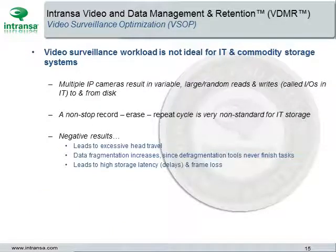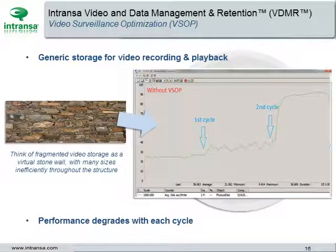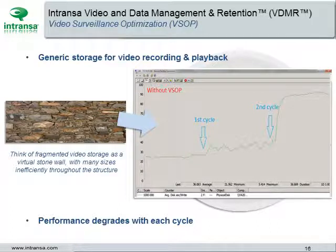Video surveillance workloads are also not ideal for IT and commodity storage systems. Multiple IP cameras result in variable, large random reads and writes — called IOs in IT — to and from the disk. A non-stop record, erase, and repeat cycle is very non-standard for IT storage. The results include excessive head travel, data fragmentation, high storage latency or delays, and frame loss. The chart at right shows that on the first cycle without VSOP running, recording is acceptable. However, spikes and peaks grow reaching the second cycle, and by the third, it's off the chart, as performance degrades with each cycle.